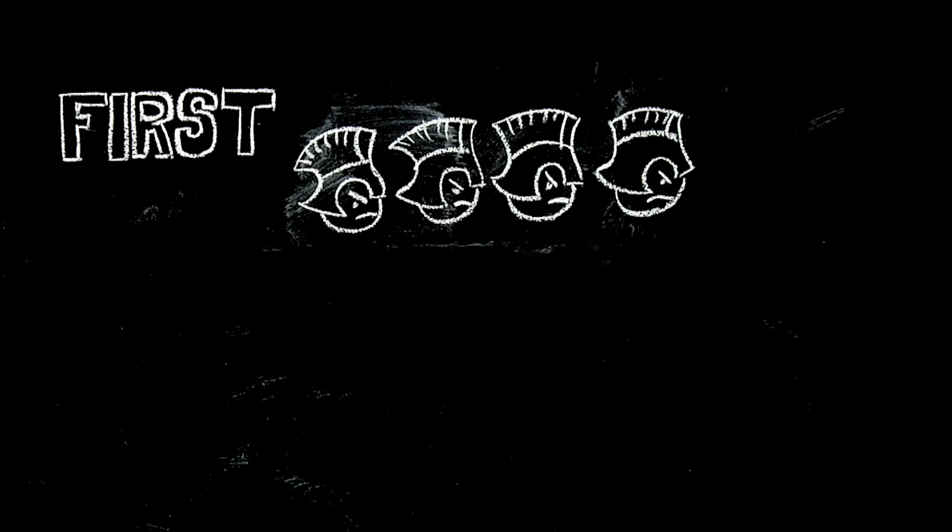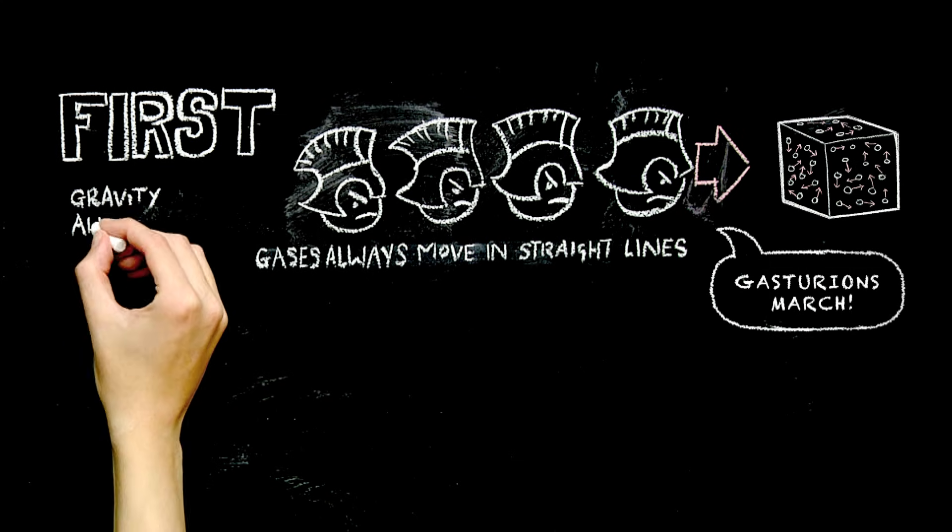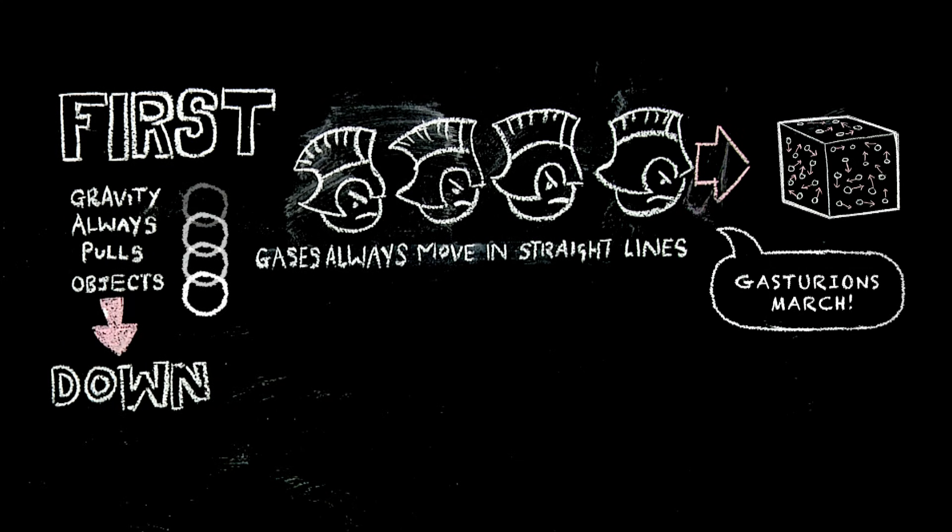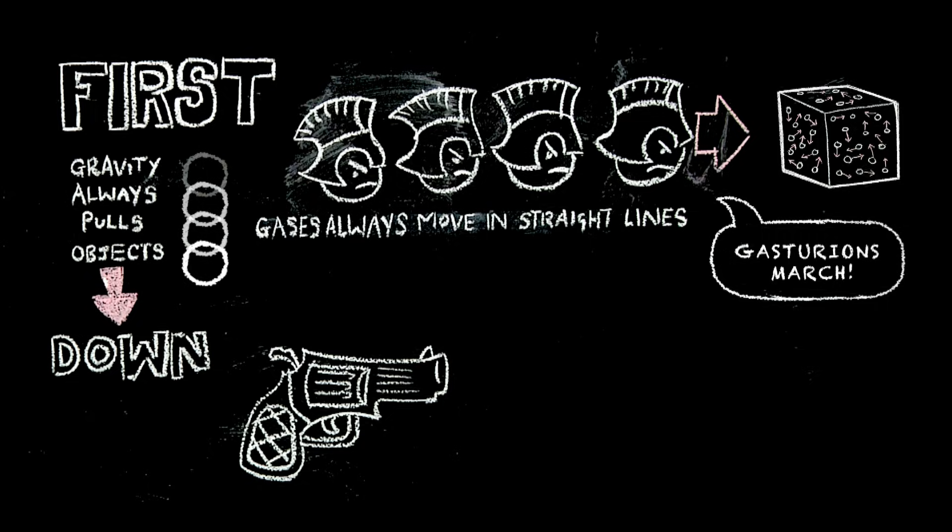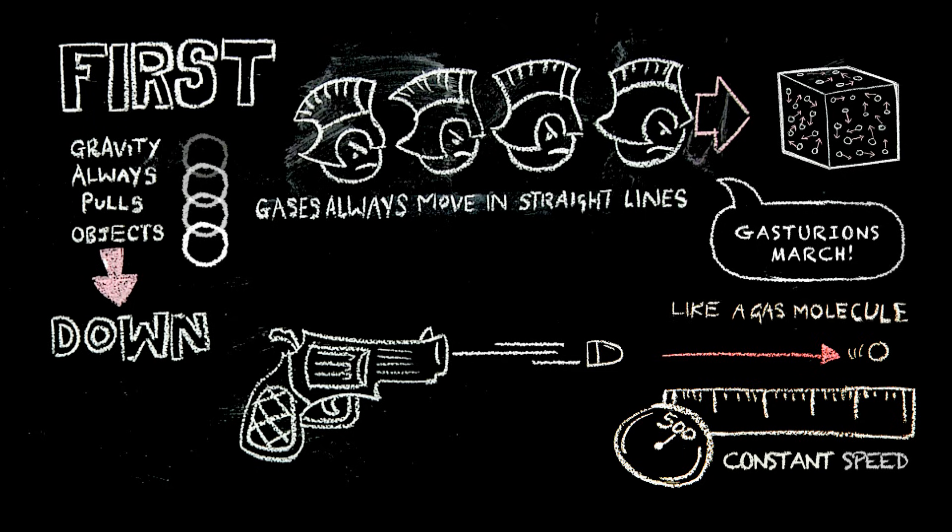First, gases always move in a straight line. We don't really have anything to demonstrate this with because gravity always pulls objects down. So imagine a bullet fired from a gun, and that bullet goes on at a constant speed in a perfectly straight line. That would be like a gas molecule.